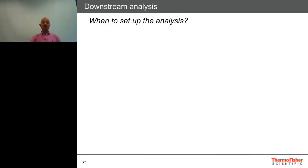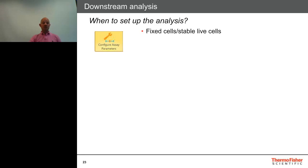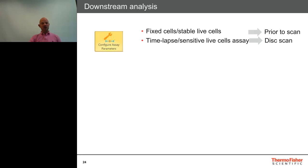When thinking about analysis, it's important to consider when we'll set it up. If we're using fixed cells or living cells with a stable reporter where processes won't be changing much during acquisition, we can set up the analysis prior to the scan — segmenting cells and identifying objects using just a few representative images taken from the plate. However, for time-lapse imaging or very sensitive rapidly-changing reporters, we can acquire images only and then go back and do a disk scan, reanalyzing the acquired images from the hard disk. This is called a disk-based scan and is a way of speeding up acquisition times.